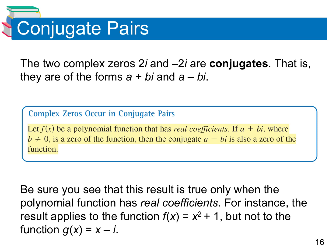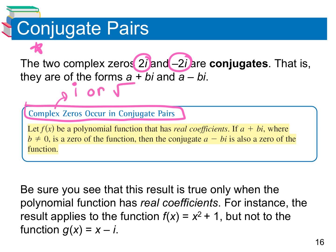In part 2, we're going to be working backwards. It's going to give us the zeros and we're going to be coming up with the polynomial function. One thing that's super important is complex zeros happen in conjugate pairs. So if 2i is a zero, negative 2i would also be a zero. Complex zeros are imaginary or square roots. So if a plus bi is a zero, then a minus bi is also a zero — that's a conjugate pair.